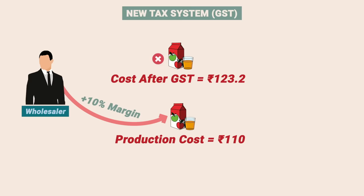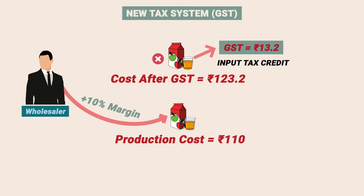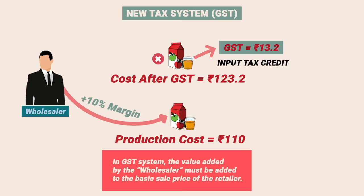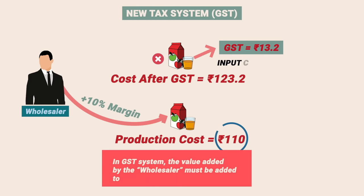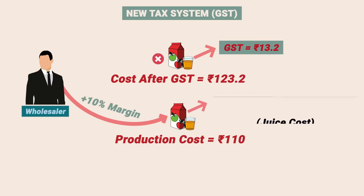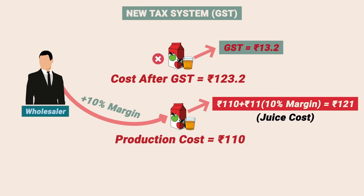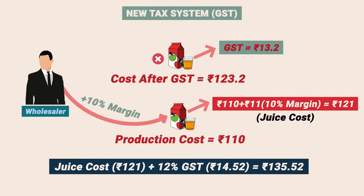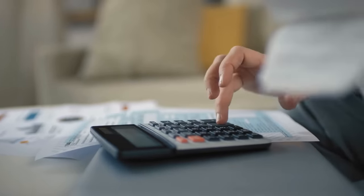Since the value of 123.2 rupees already includes a tax of 13.2 rupees, the wholesaler is also eligible for an input tax credit. In the GST system, the value added by the wholesaler must be added to the basic sale price of 110 rupees. So if he adds another 10% on the 110 rupees sales price, the juice costs 121 rupees. Then GST of 12% is added to 121 rupees, taking the amount to 135.52 rupees. There are three major benefits GST brings: first, you don't end up paying tax on tax; secondly, the cost of products drops significantly.